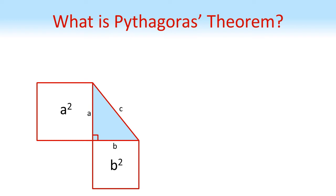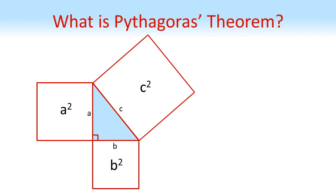We're also going to do the same thing for the hypotenuse. So this is C by C, hence an area of C squared. Pythagoras' Theorem states that the area of the square on the hypotenuse is equal to the sum of the squares on the two smaller sides. So algebraically we get the equation that A squared plus B squared is equal to C squared.